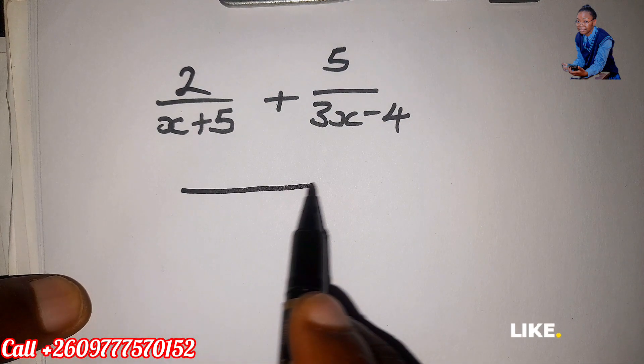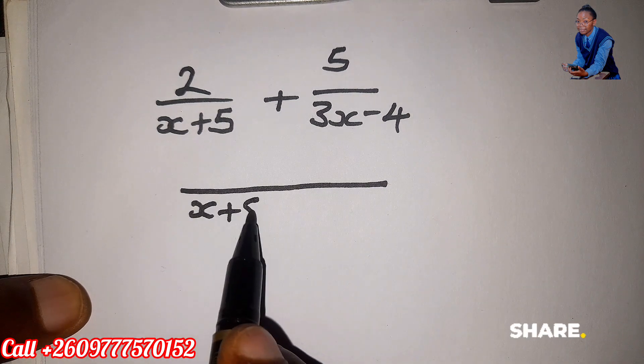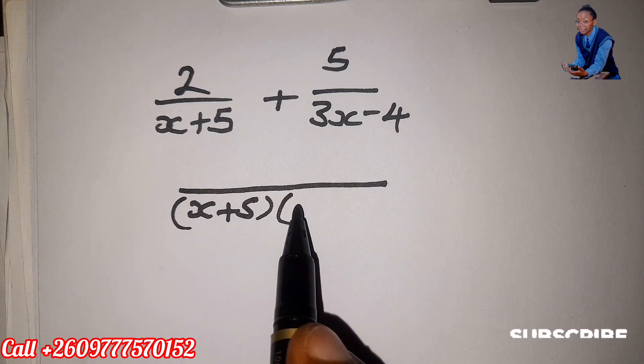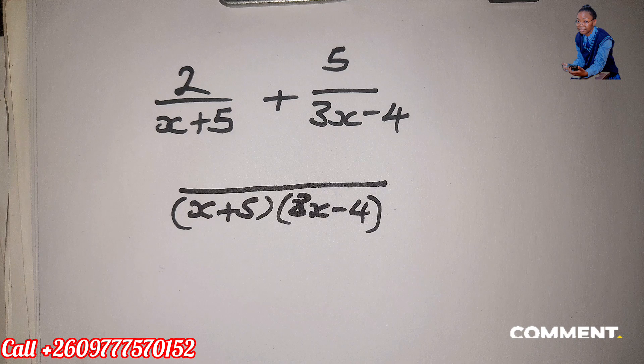So what you do is, you just show that you're multiplying them: x plus 5, put it in brackets, multiply it by 3x minus 4, close bracket.